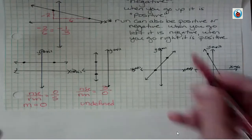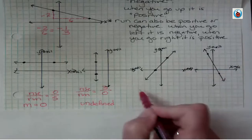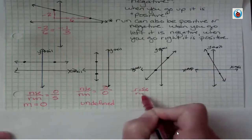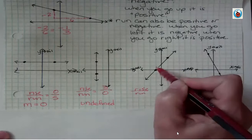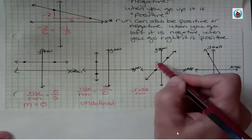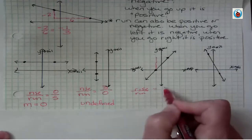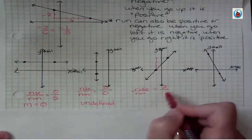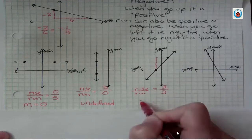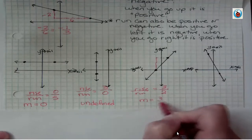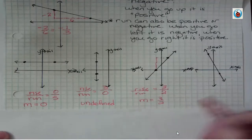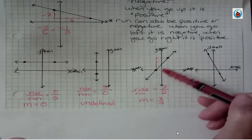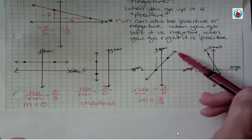Let's take a look at this next line — rise compared to run. From here, I'm going three up, so I have a rise of three, and two over, so I have a run of two. My slope is three-halves. I could tell by looking that the slope was going to be positive because the line was rising.